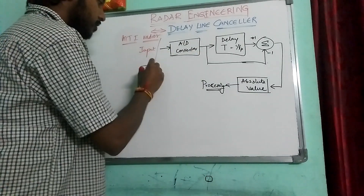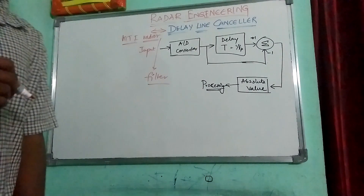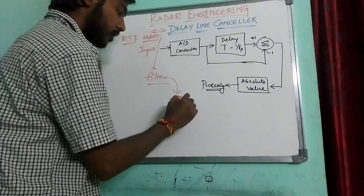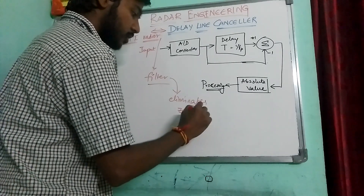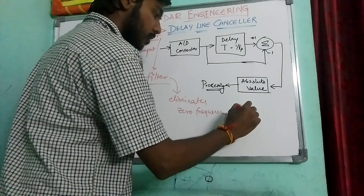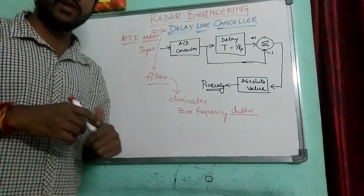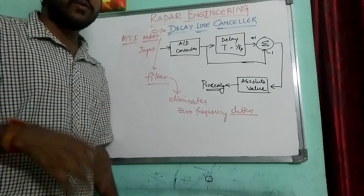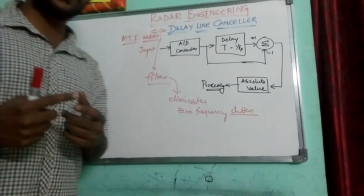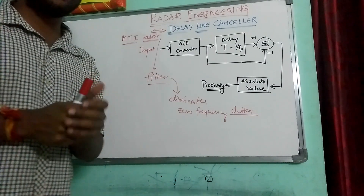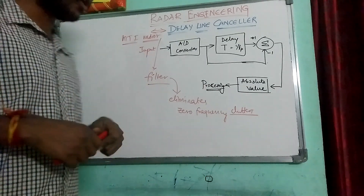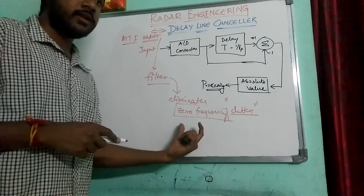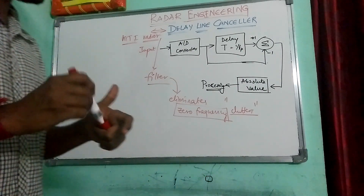This DLA cancelling is a filter which is used to eliminate the stationary clutters at zero frequencies — that means, it eliminates zero frequency clutters. Clutters are the unwanted echoes which we receive whenever we are transmitting a signal through radars. They might cause interference with the receiving signal, which is the useful signal. Both might be interfered, resulting in a different signal which is not the message signal. So this filter is mostly designed to eliminate the zero frequency clutters, and that is why we use DLA cancelling.